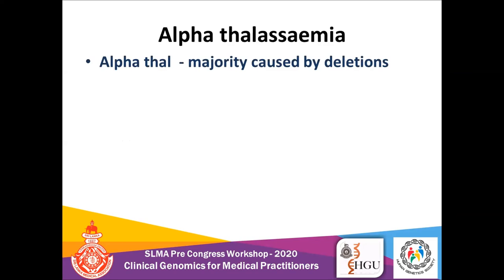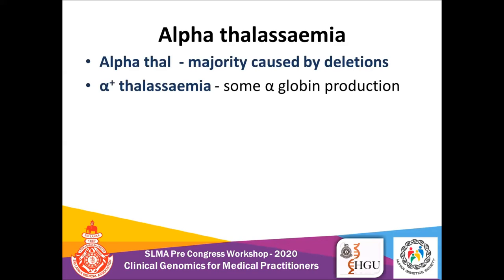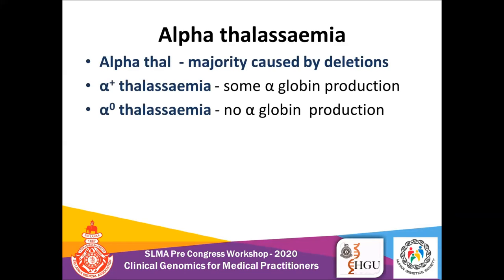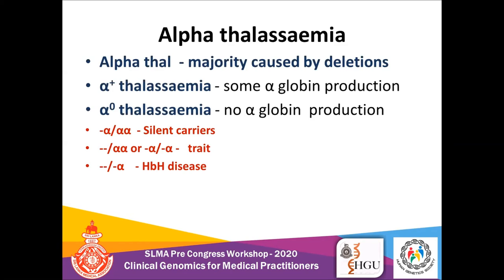Alpha thalassemia is mainly caused by deletions. There are two types of mutations: alpha-plus thalassemia, where some amount of alpha globin is still produced, and alpha-zero thalassemia, where a mutation results in no production of alpha globin. Clinically there are four entities: silent carriers have three functioning genes; alpha thalassemia trait has two functioning genes, either heterozygous or homozygous; in HbH disease they have only one functioning gene with three deleted, causing excessive beta chains to precipitate within red cell precursors, forming HbH inclusions. The fourth type is HbBart's hydrops fetalis.